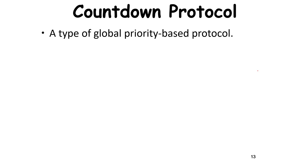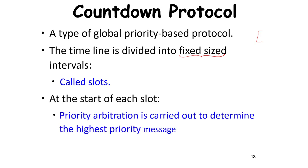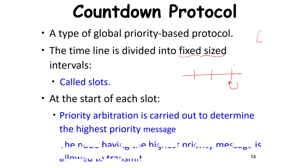The countdown protocol returns to a global priority-based approach. An epoch of time is divided into fixed-size slots. At the start of each slot, a priority arbitration is carried out to determine the highest priority message. Time is discretized into units, and at the start of each unit you look at all nodes and their messages, determine the highest priority message, provision some time for doing that, and then send that message.